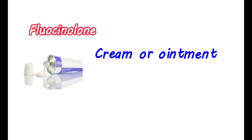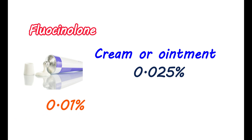You can get fluocinolone acetonide cream or ointment at a strength of 0.025%. Cream is also available at a higher strength of 0.01%. You can get a topical solution, shampoo, and oil at the same strength.